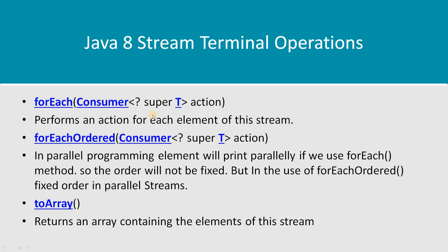Consumer takes an argument as input but does not return any value. Next is forEachOrdered — this comes into picture when using a parallel stream. If you call forEach on a parallel stream, the results may not be in order. If you need the results in a fixed order with a parallel stream, use forEachOrdered. toArray simply returns an array containing the elements of the stream.